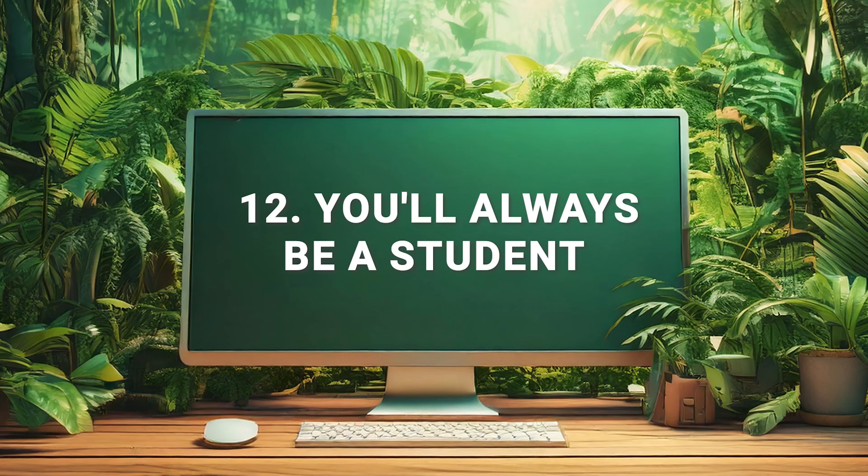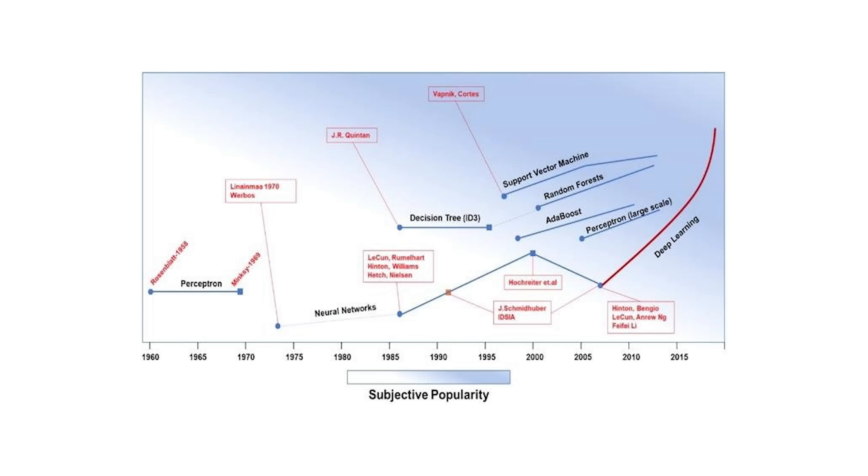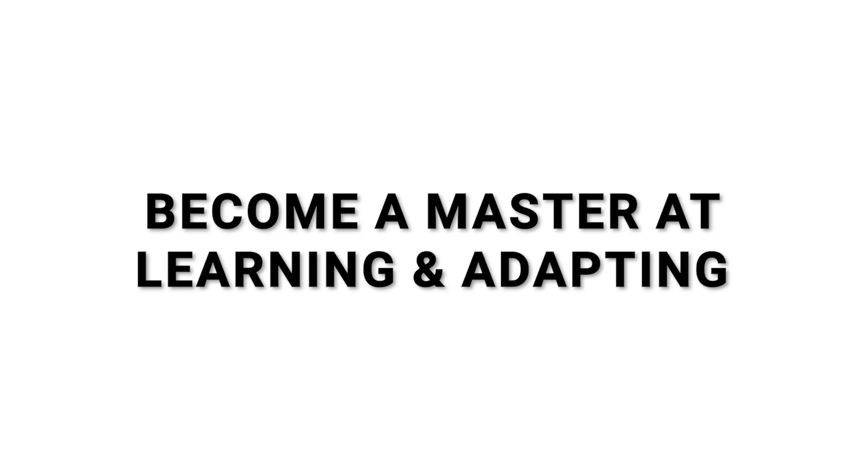You'll always be a student. Machine learning is evolving rapidly. Techniques, tools, and algorithms that are cutting edge today may become obsolete tomorrow. You will never have mastered machine learning. Keep learning continuously and be adaptable to new advancements. Tech in general, but AI and machine learning in particular, are fields that are great if you love learning as you will never know everything. You might not become a master at any particular topic, but you can become a master at learning and adapting, which is truly the most important skill in tech, because no project is like any other.